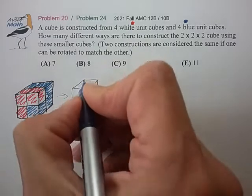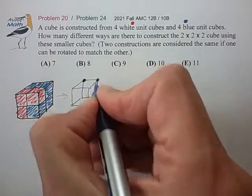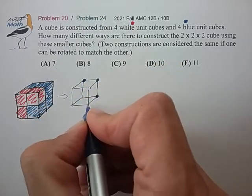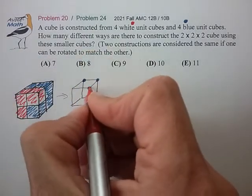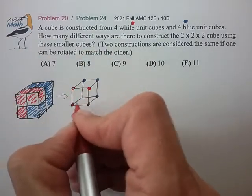So I would draw this instead as the vertices of a cube. These four vertices are blue, these four vertices are red.